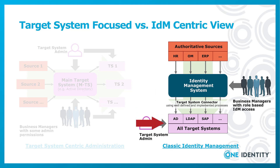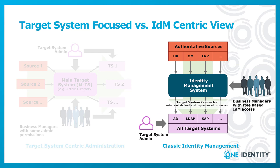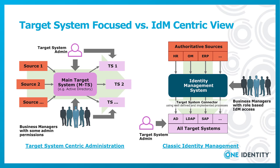Connected to the identity management system exist target systems and it makes no difference which target system it is — all of them have users and permissions and they get controlled by that identity management system. Business managers are completely different from before: these business people do not have any access to target systems anymore. They now have access to an identity management solution and they do their business administration there. From a provisioning perspective the identity management system will then use a connector — a system-based agent — just to provision something in target systems, which at the end limits the amount of permitted users to an absolute minimum.